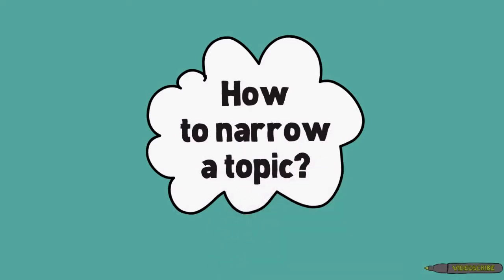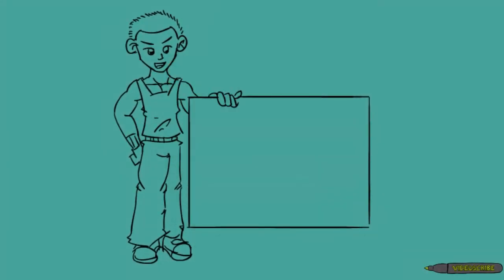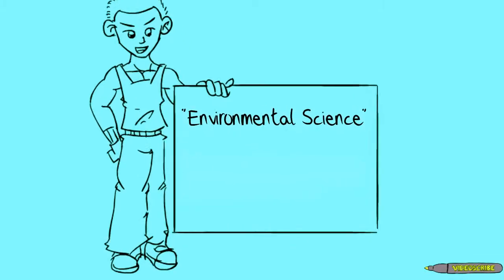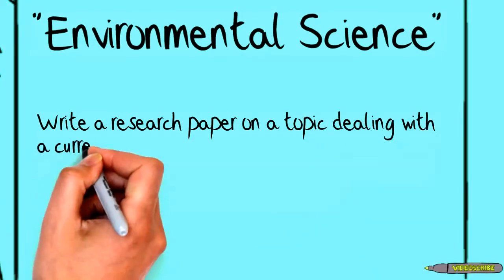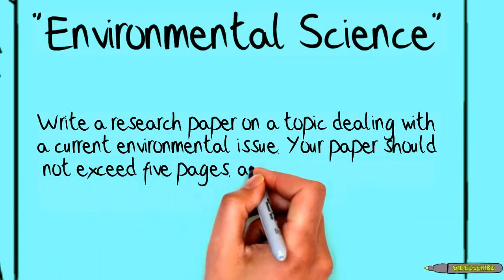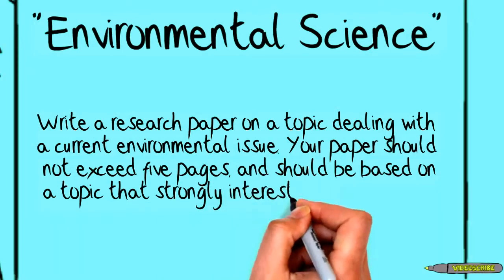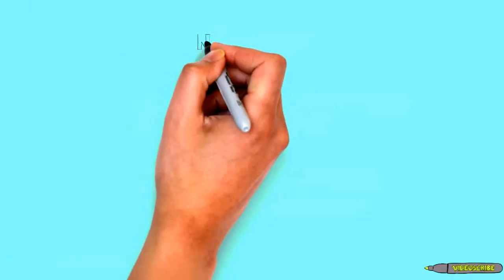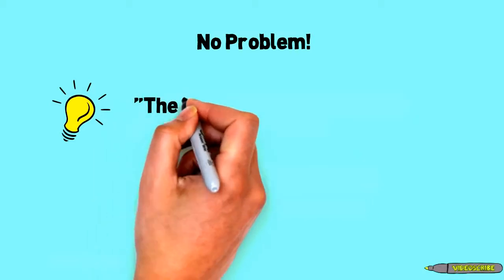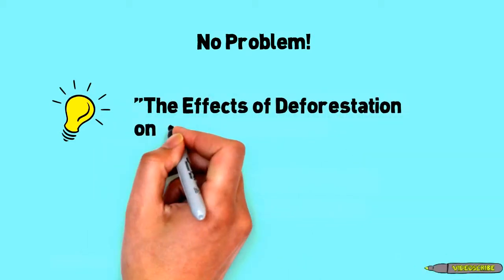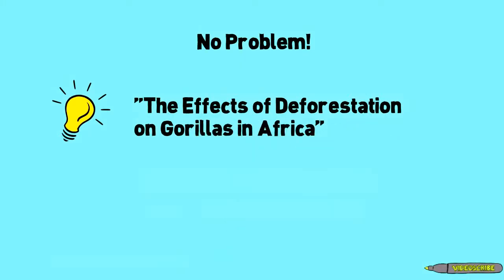Sometimes it can be really difficult to find a topic that is not too broad. Here are a couple of words of advice on what to do when your topic seems too broad. Let's say you are in an environmental science class. Your teacher gives you this assignment prompt: write a research paper on a topic dealing with a current environmental issue. Your paper should not exceed five pages and should be based on a topic that strongly interests you. You say, that's no problem — I saw a show the other day on TV and it talked about the effects of deforestation on gorillas in Africa. I think that's a great topic. I know it interests me and it's creative, so let's write about it.